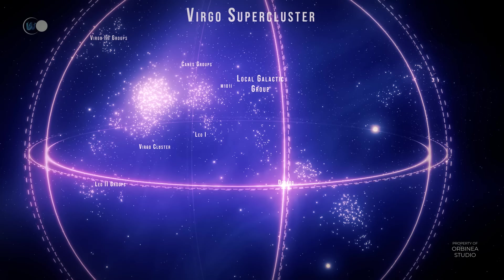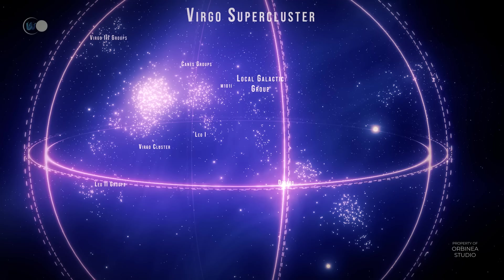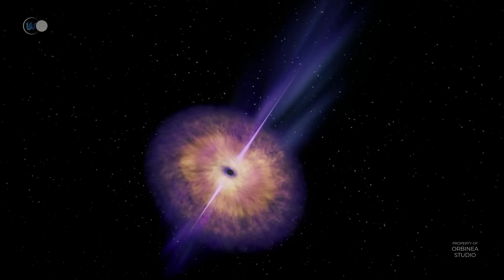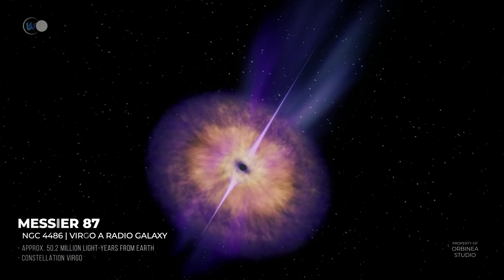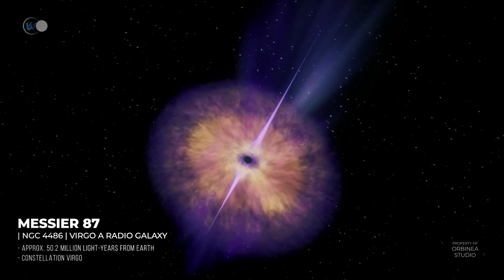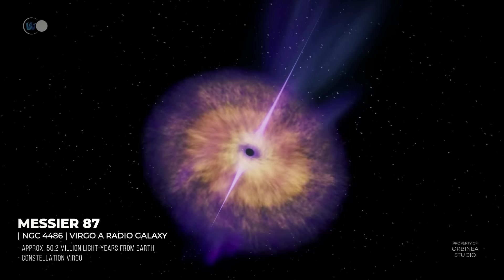This cluster lies 50 million light-years from the Milky Way. Within the Virgo Cluster lies a giant cannibal galaxy, Messier 87, which attracts and absorbs its neighboring galaxies.